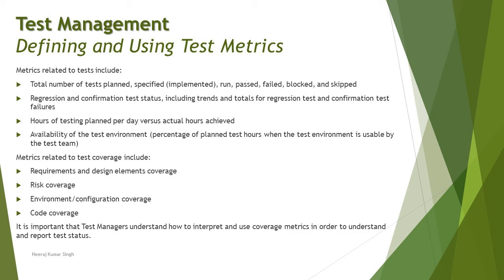Other test metrics include: hours of testing planned per day versus actual hours achieved — a comparison of the effort being put in — and availability of the test environment, which is the percentage of planned test hours when the test environment is usable by the test team. These are just some typical examples; there are many other metrics that can be found specific to each dimension.